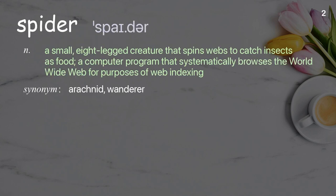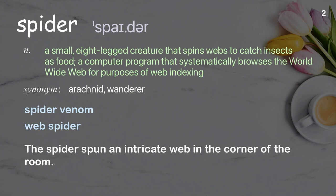Spider: A small, eight-legged creature that spins webs to catch insects as food. Also, a computer program that systematically browses the world wide web for purposes of web indexing. Examples: Spider venom. Web spider. The spider spun an intricate web in the corner of the room.